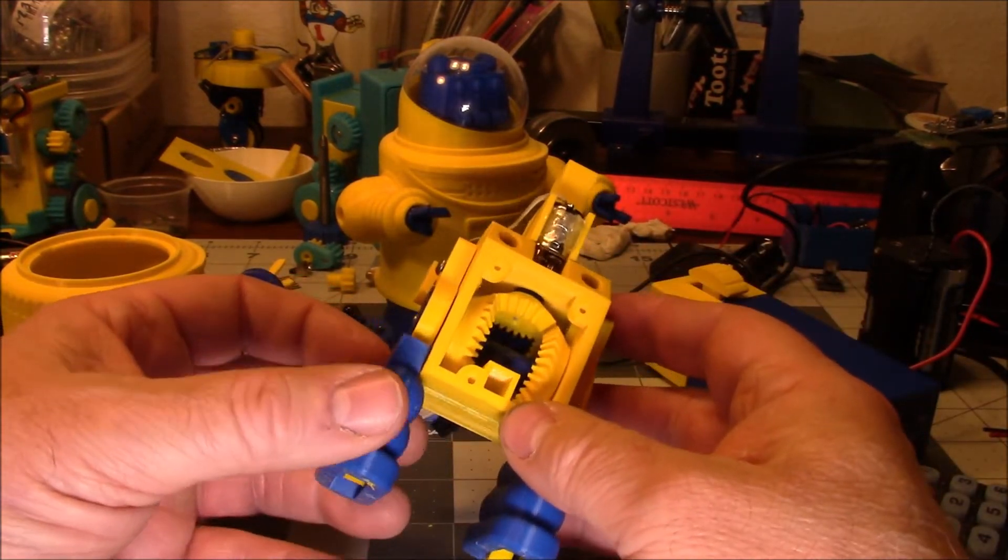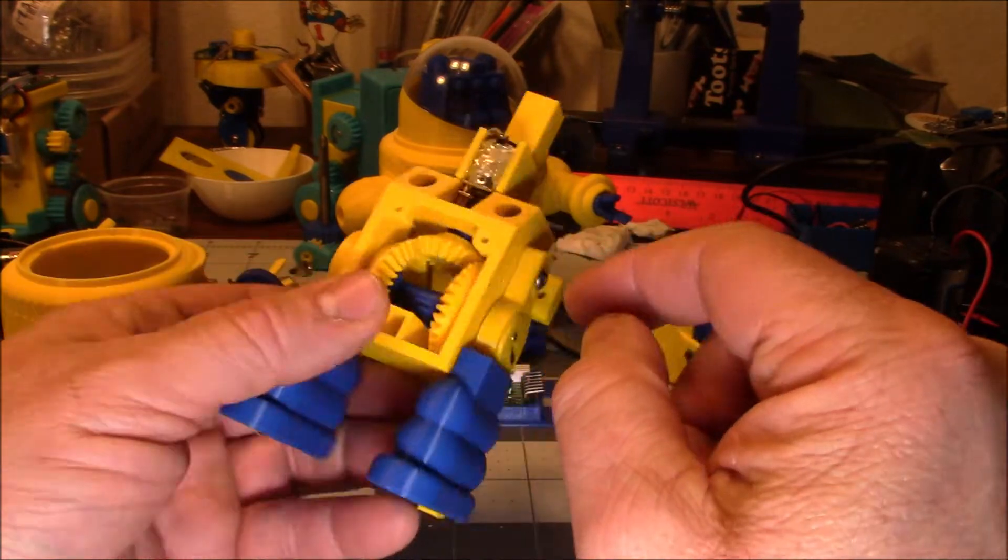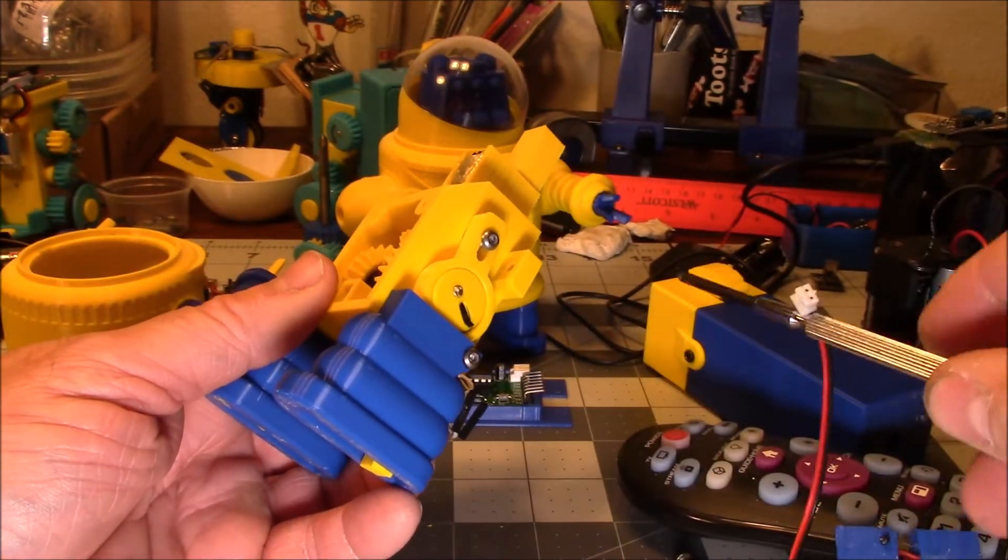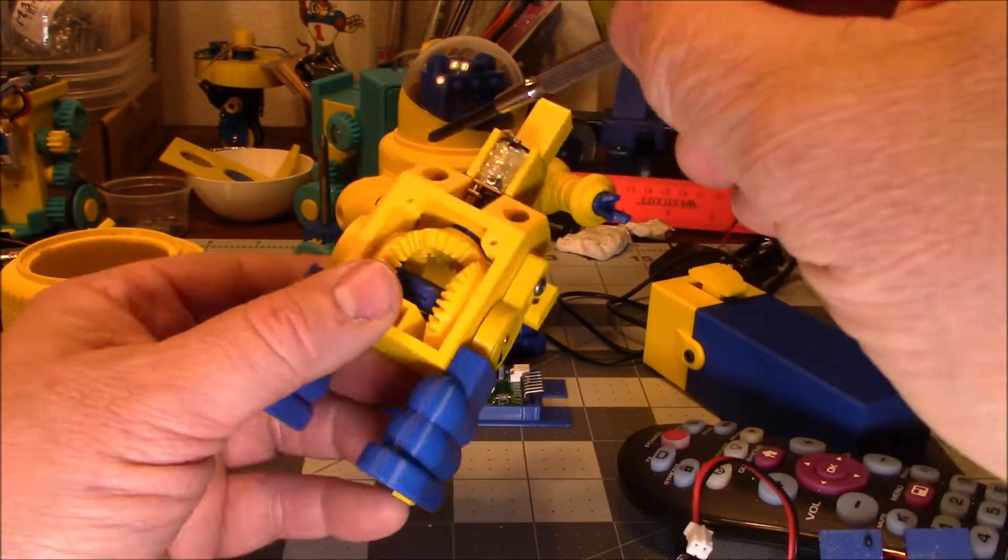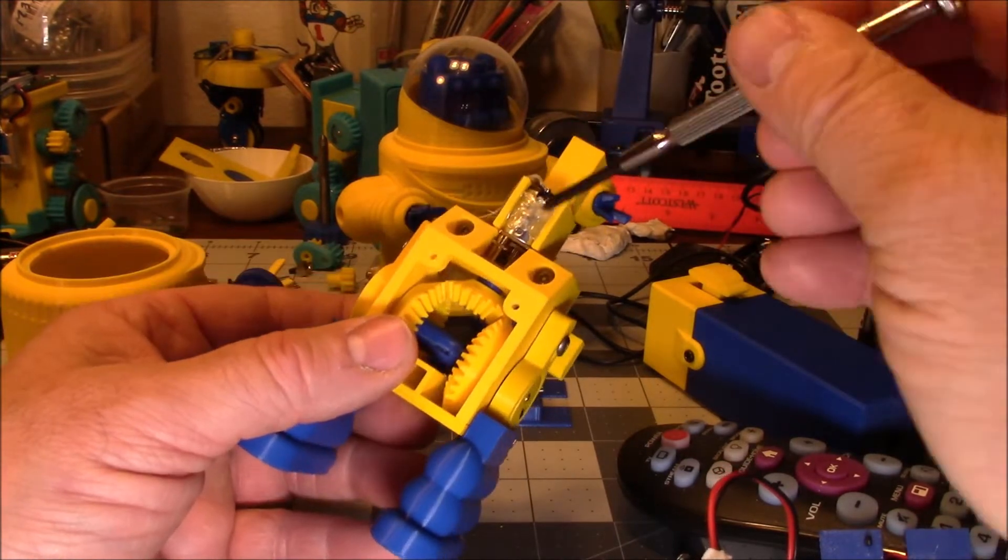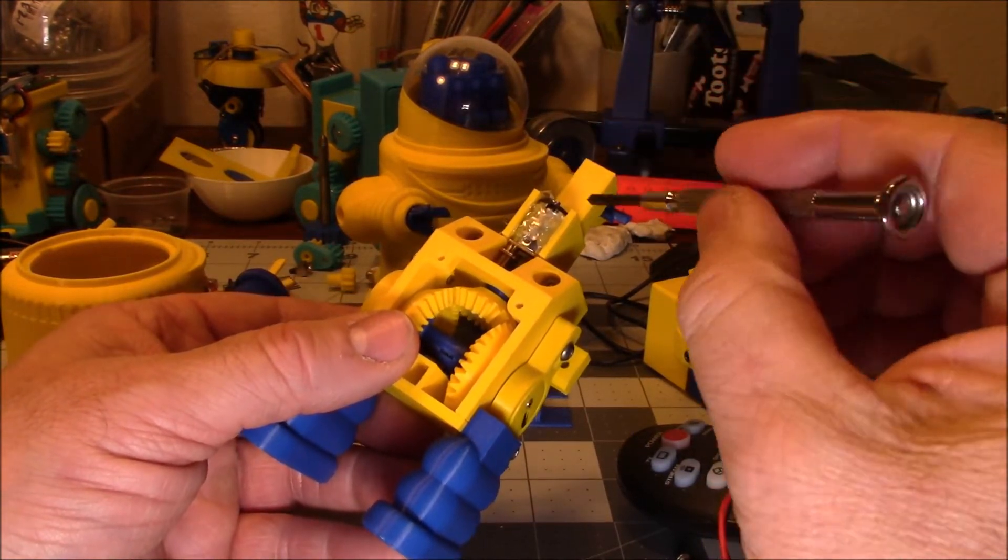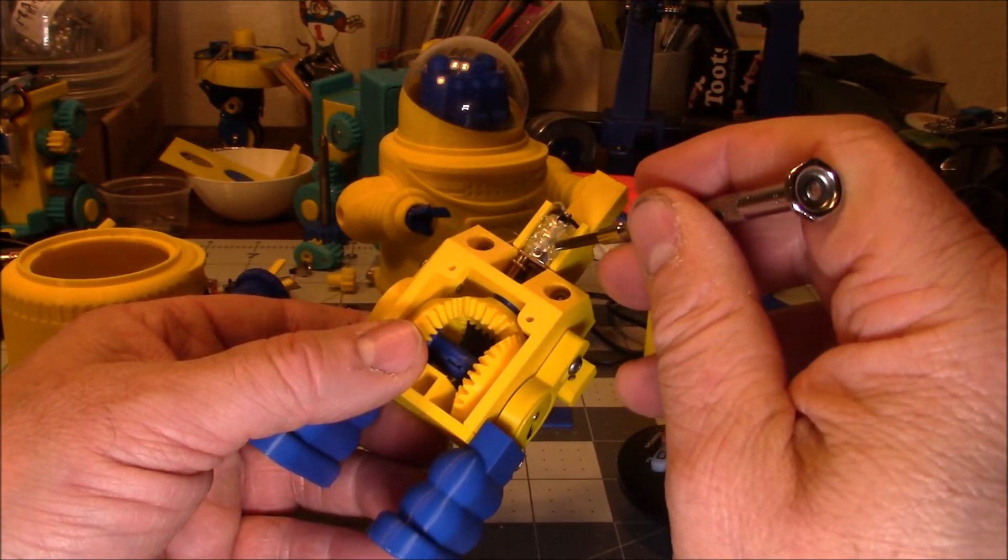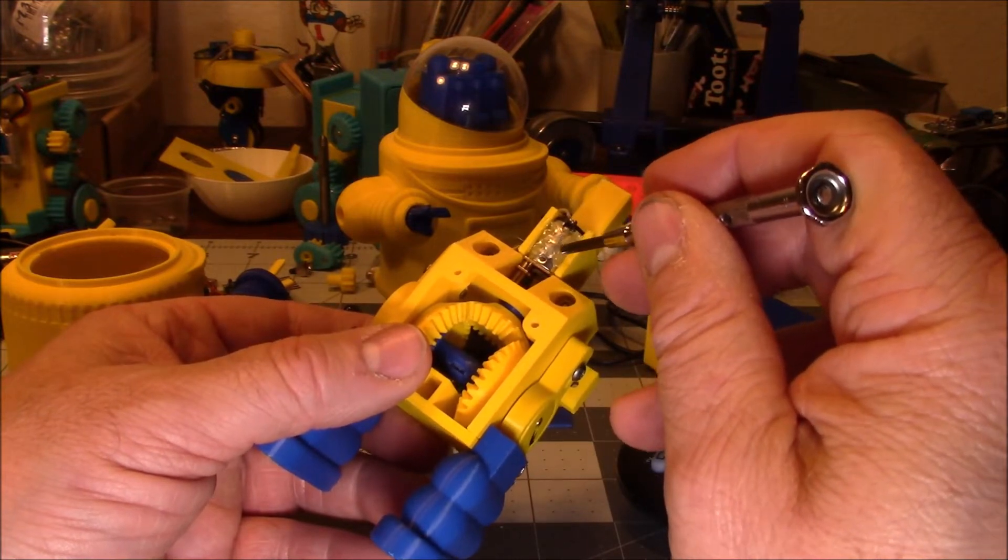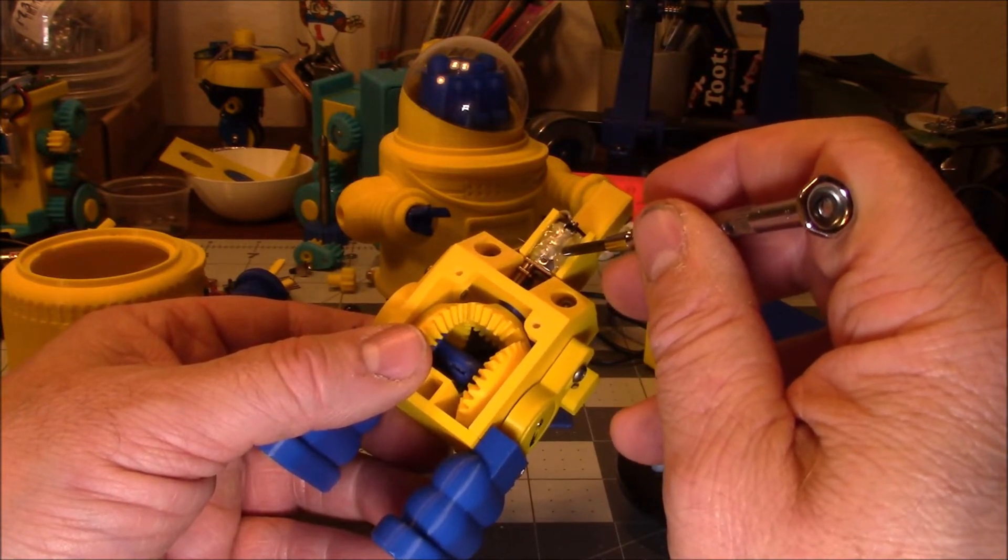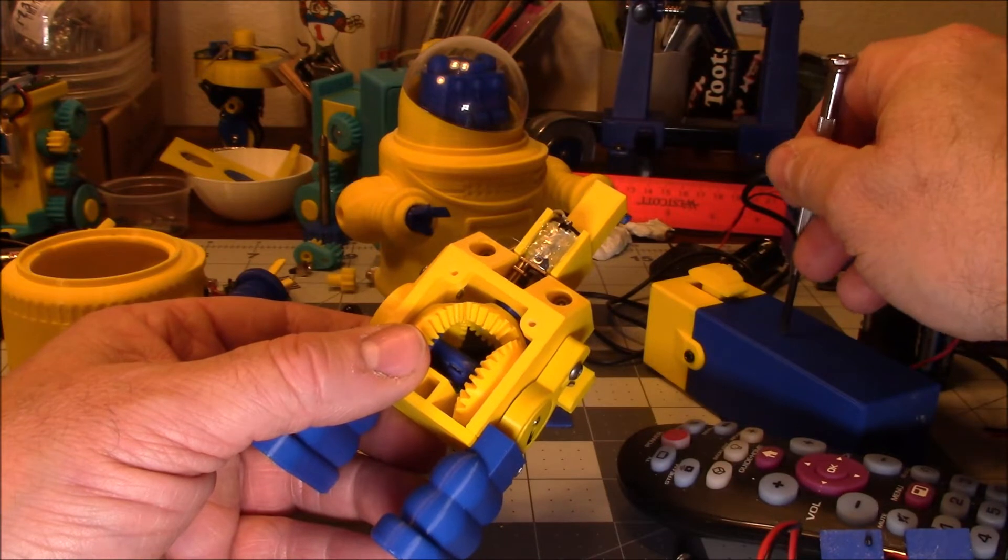Here we have the frame. This part is called the frame, the frame clamp, the legs, the cams, the pins that drive it, the N20 motor. For the remote control version, I used a six volt 200 RPM motor. For the battery driven version, I used a six volt 160 RPM motor.